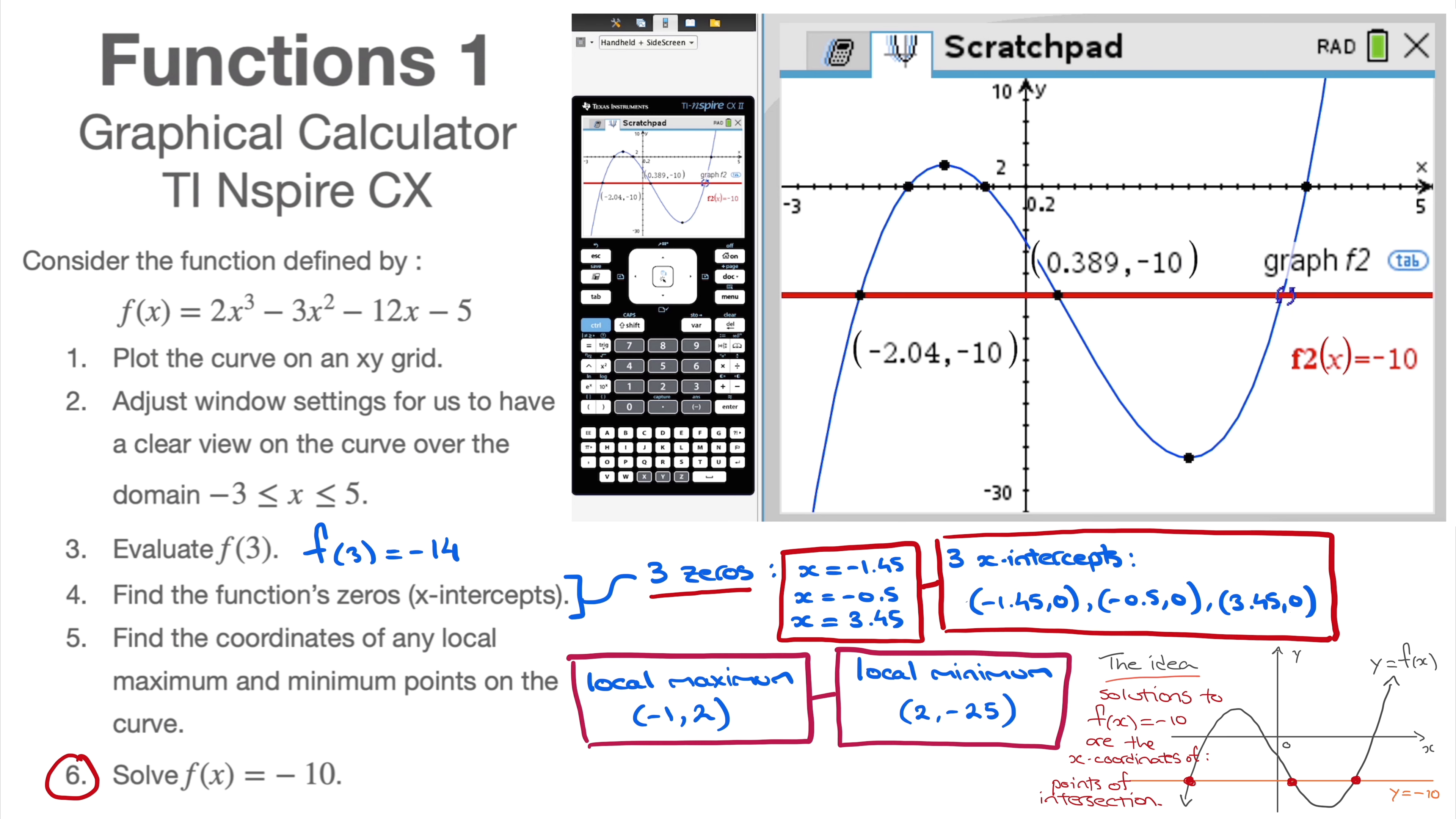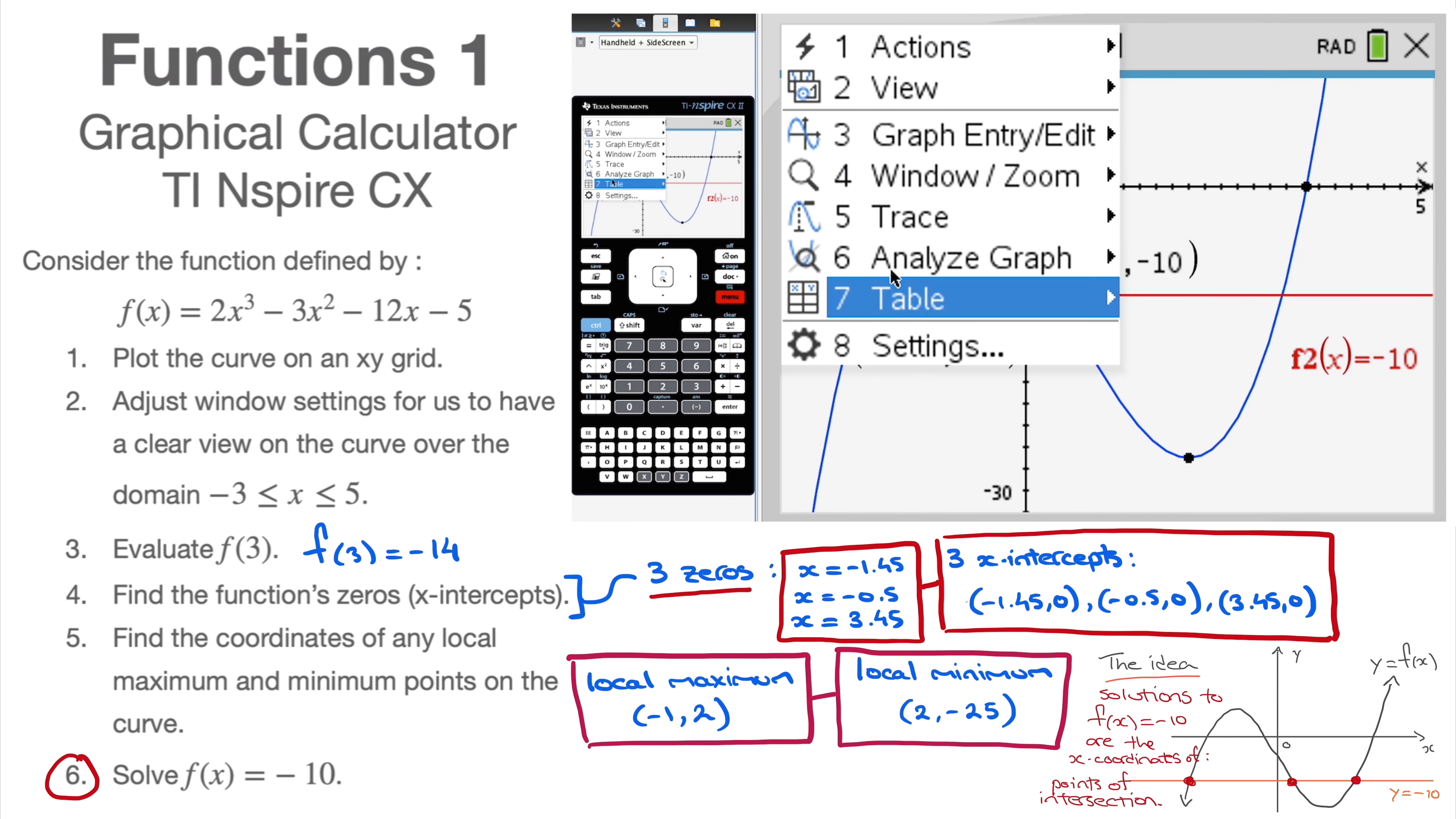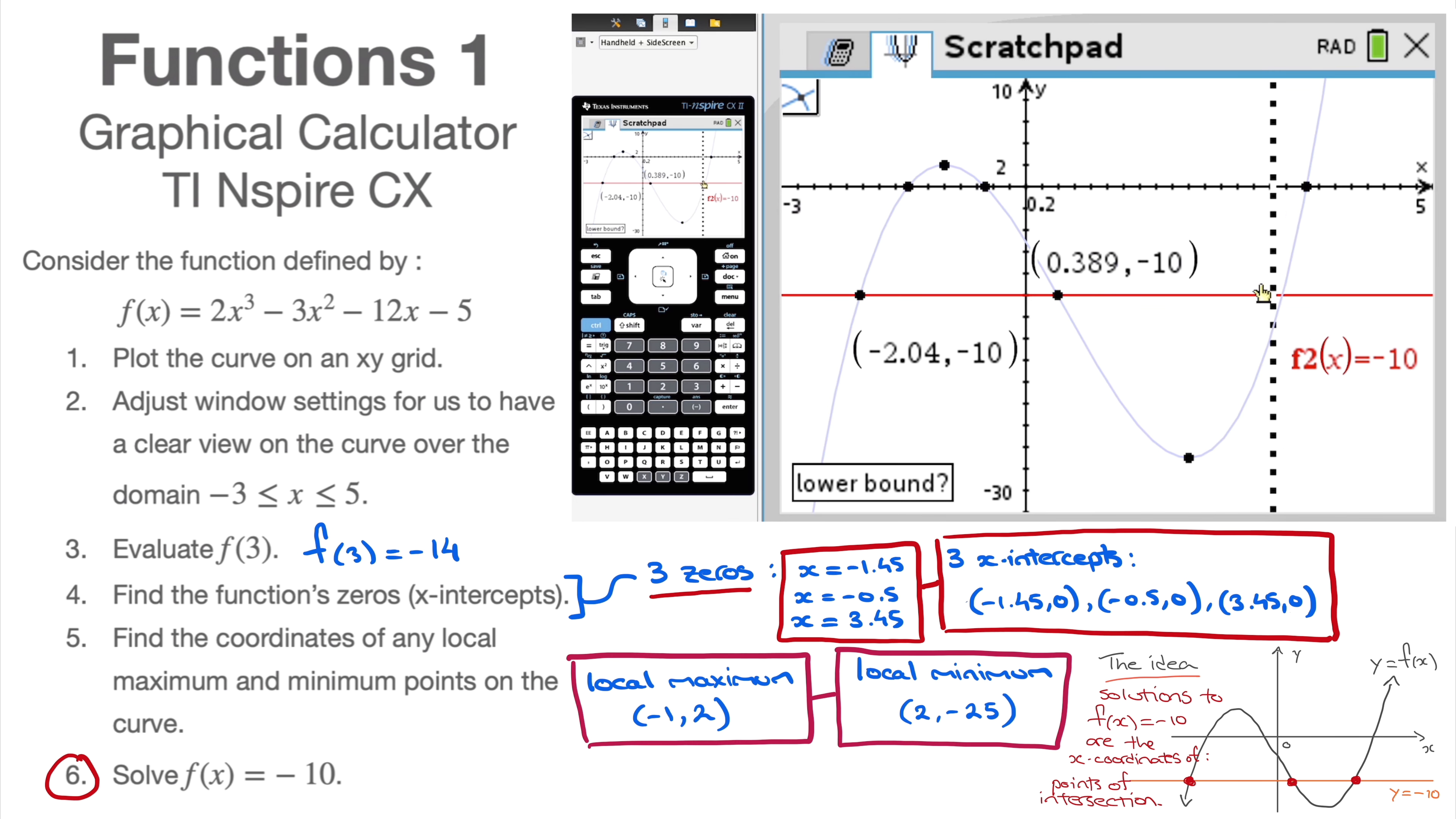I can see there's one more solution over here. I do the same again. Menu, analyze graph, the intersection. I go to the left of that point, I click, and I go to the right of that point. And I click. I now have the third solution, 3.15. Those are all the solutions to f(x) = -10.